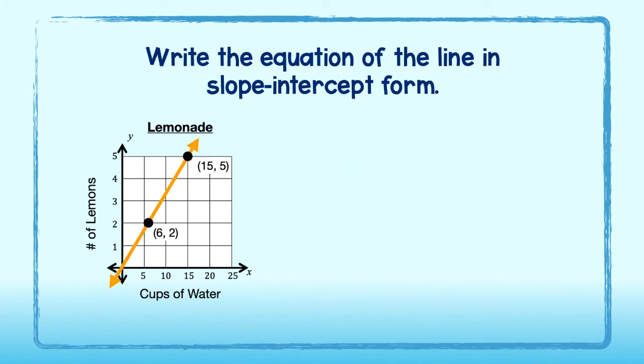How about this one? The graph shows the number of lemons needed for various amounts of water to make lemonade. Can you write the equation of the line in slope-intercept form? That is, the form y equals mx plus b. Go ahead and give it a try.